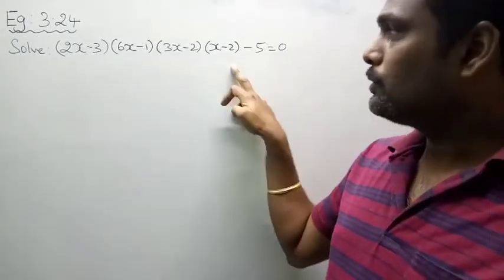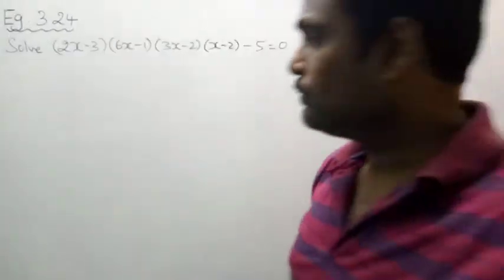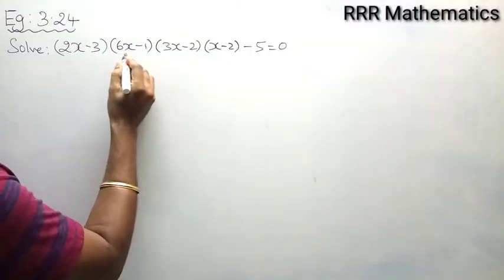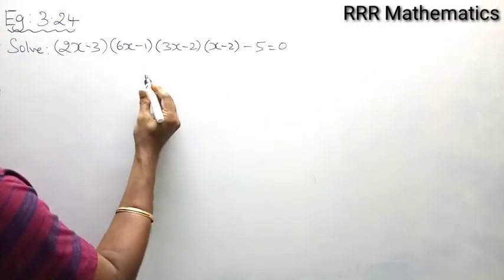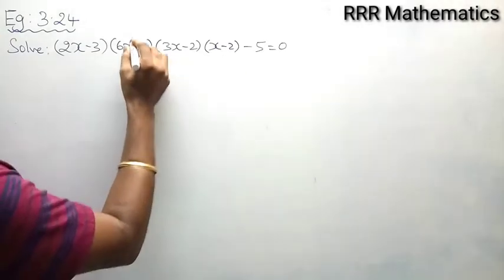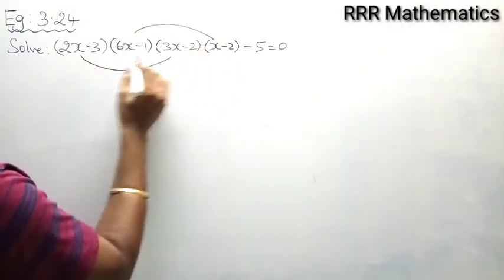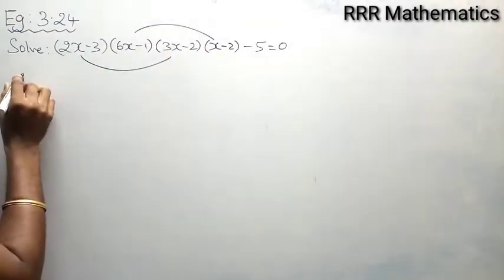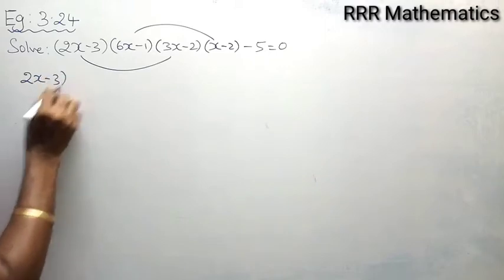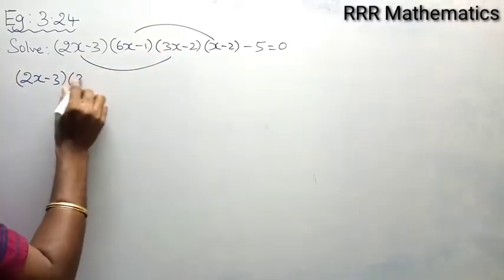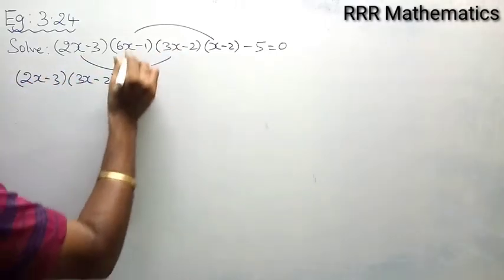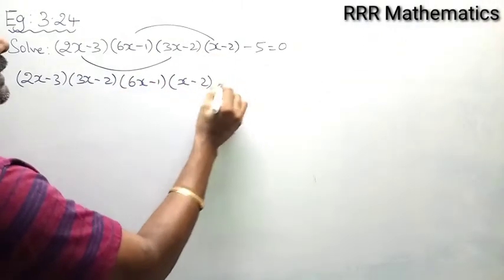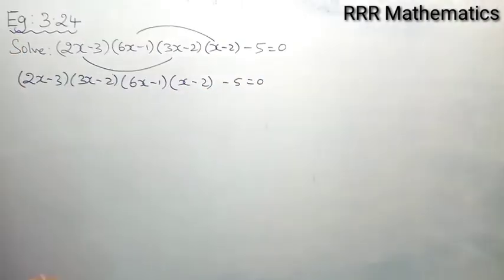According to this corrected question, I am going to solve the problem. When you make a pair between these two terms, you get 12x² and 18x², which won't be equal. So instead, make a pair between (2x-3)(3x-2) and (6x-1)(x-2) — both give 6x² as the leading term.